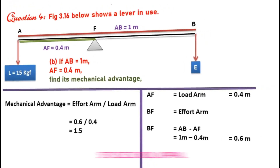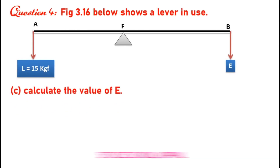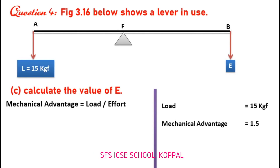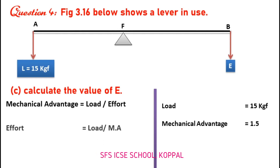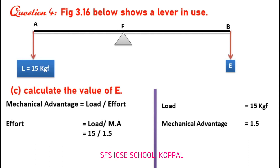Now, Part C: Calculate the value of effort. We know mechanical advantage is equal to load divided by effort, and the load is given as 15 kgf. Mechanical advantage we already found as 1.5. So effort equals load divided by mechanical advantage — substituting, 15 divided by 1.5, which equals 10 kgf.